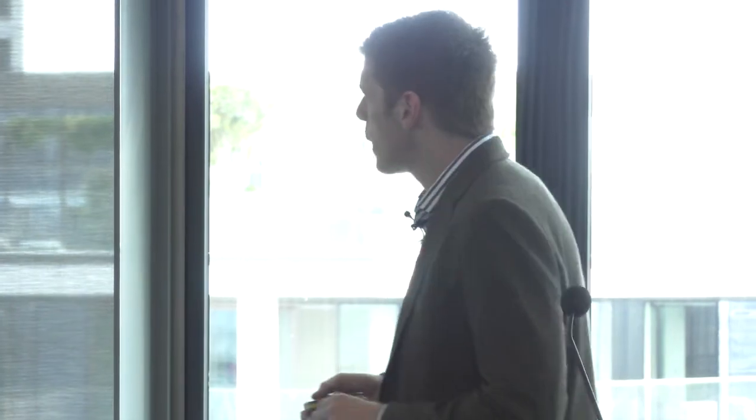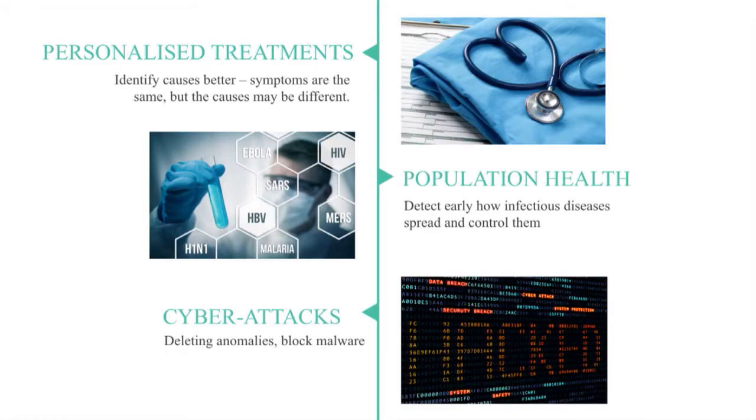Further down the line, population health: we want to find characterizations and disease signatures or patterns that define infectious diseases in order to control and contain them. Another example is cyber security. Neuromorphic computing can classify what exactly is happening in a network — is it buggy software causing anomalous behavior, or is it indeed a cyber attack? That helps us tackle it.